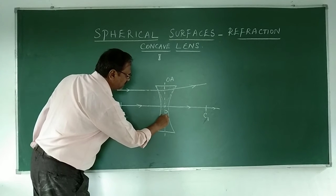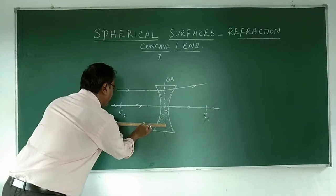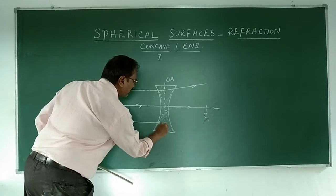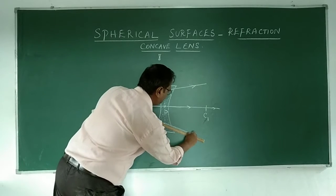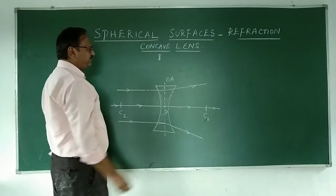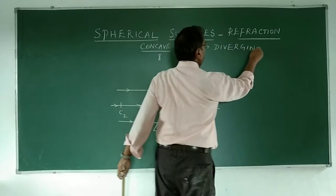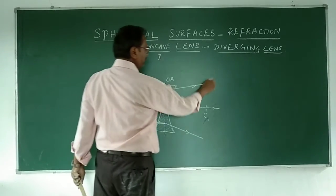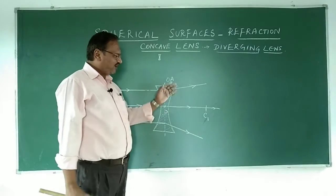Consider a truncated prism — it doesn't have the apex. A ray coming and striking parallel to the principal axis will go until the optical axis and then diverge. What word do we use? Diverge. In the convex lens case it was converging; here it is diverging — moving away from each other. So a concave lens can also be called a diverging lens.